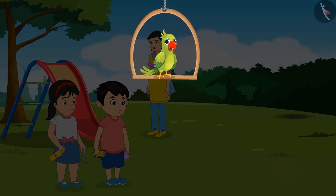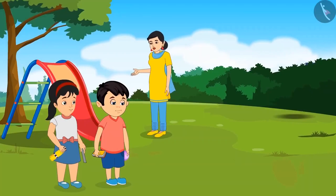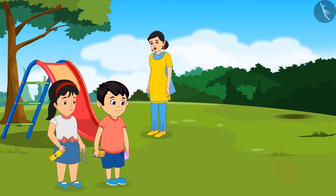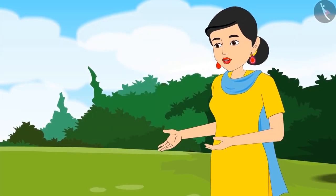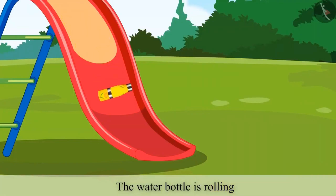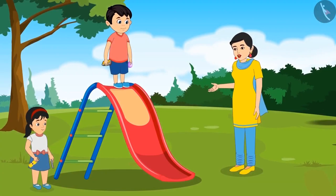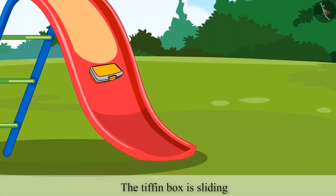Let's see what they are doing now. Chotu and Pinky, both of you bring the objects here and then push them one by one off the swing to see if it is rolling or sliding. Just see Pinky, the water bottle just rolled and fell down. And Chotu, your tiffin box came down sliding.